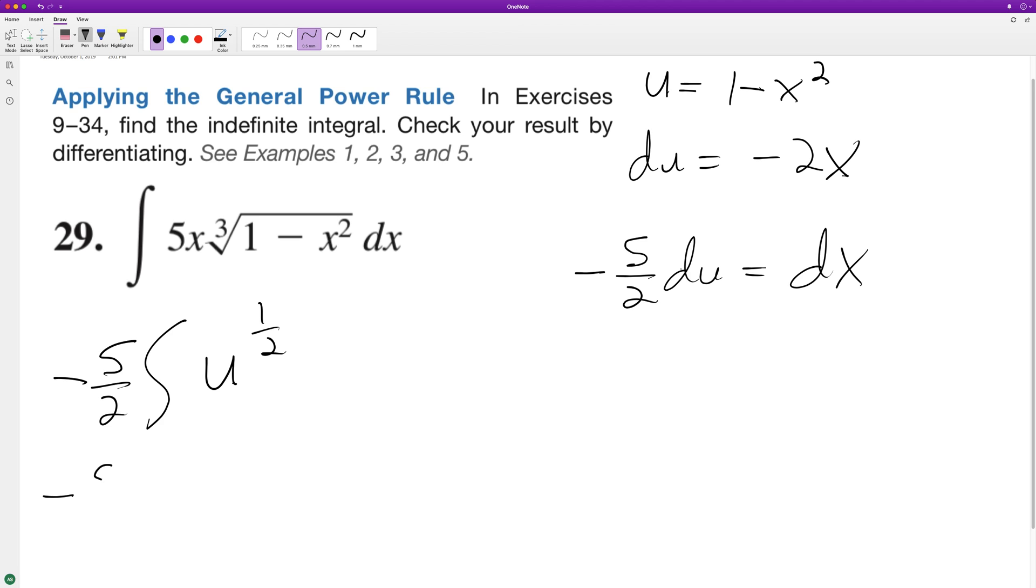When we integrate this, we get negative 5 halves u raised to the one half plus one, over one half plus one, plus C. Simplifying this, we get u raised to the three halves over three halves, plus C.